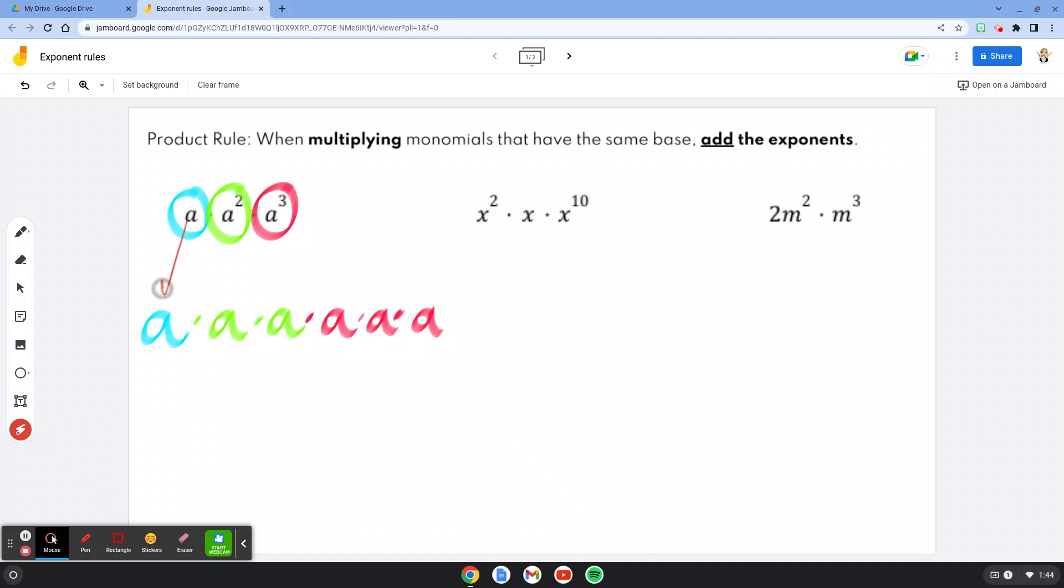So in this case, we have a, which is just one a I drew down here, a squared, that's a times a, which is in green, and then a cubed, or a to the third power, is in red. So when I'm looking at these terms,